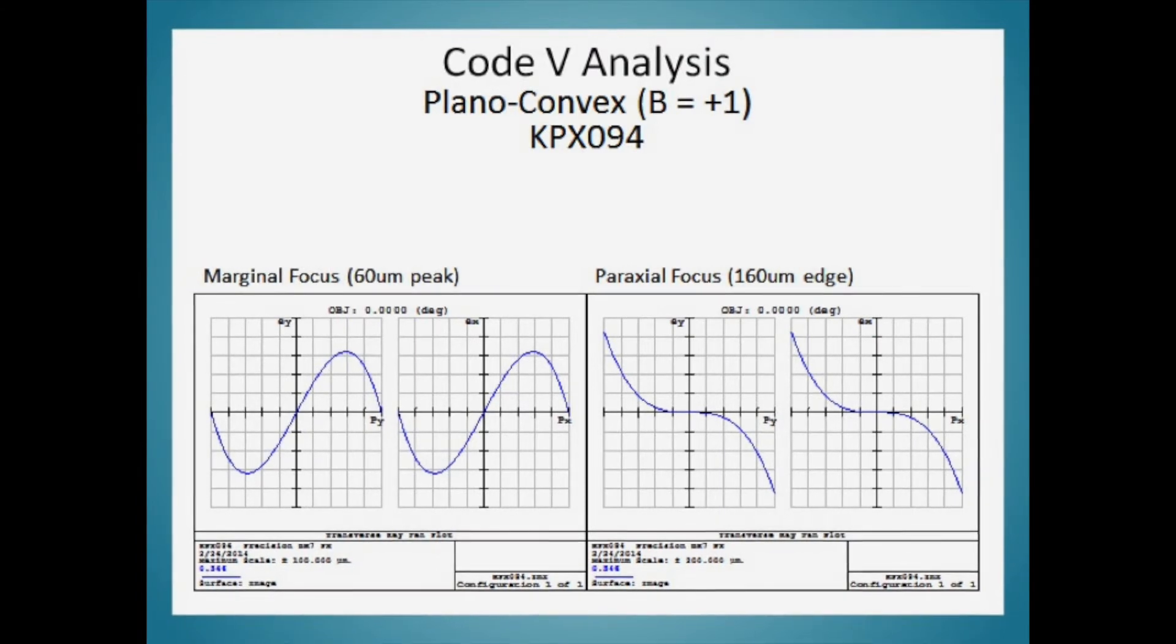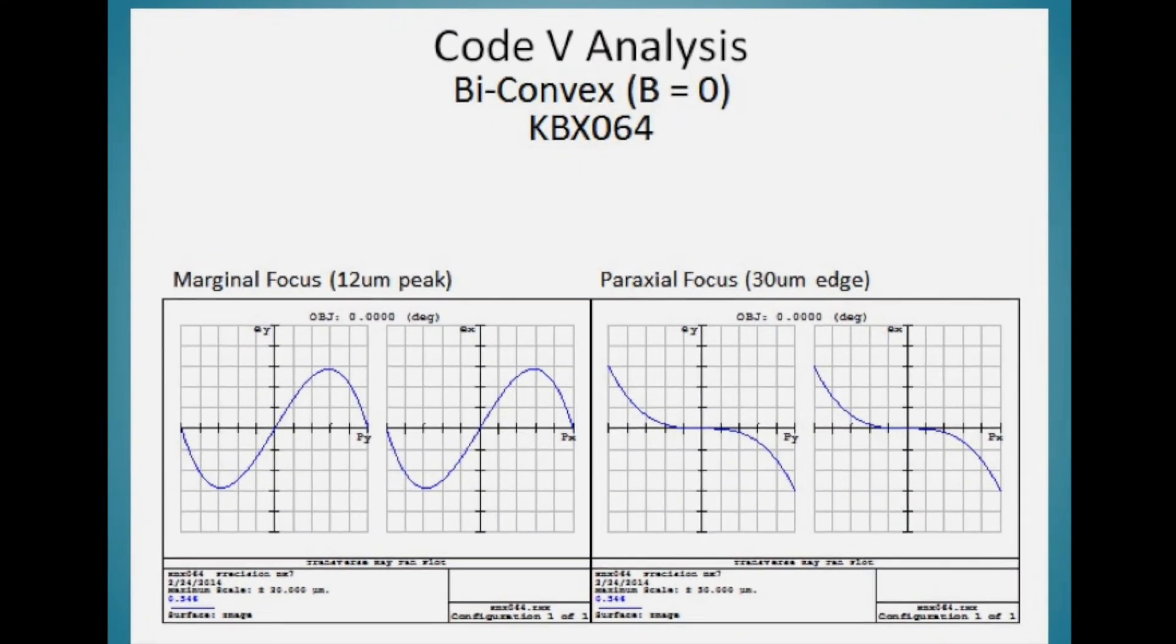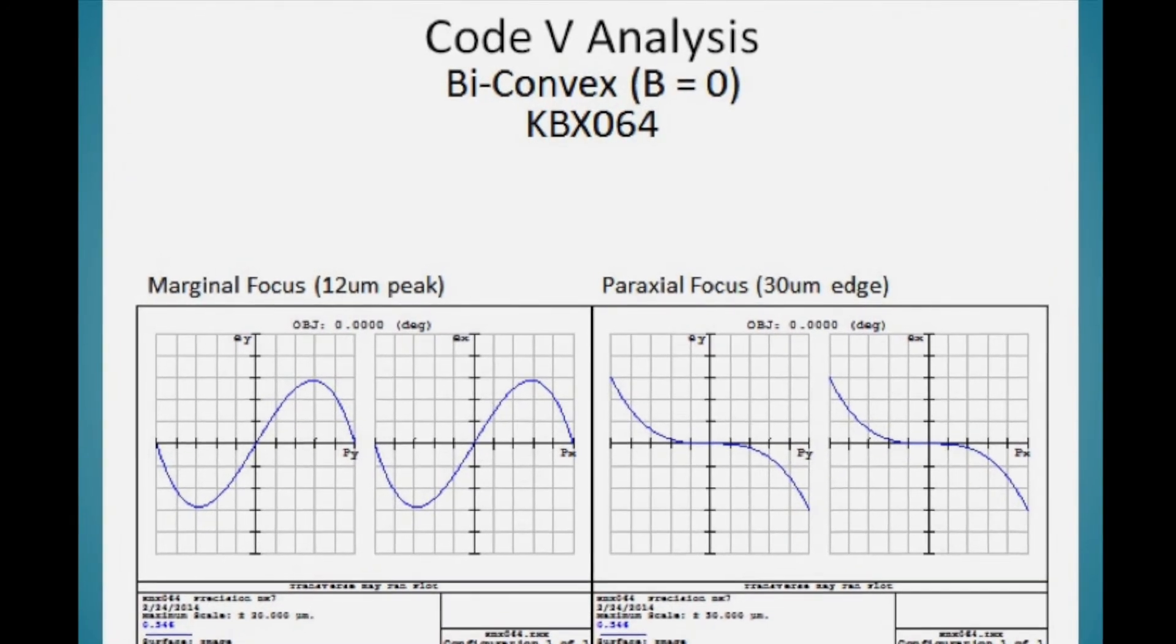For a conjugate factor of c equals minus one, our theory states that the shape factor of b equals one should be ideal, but Zemax shows that a shape factor of b equals zero is ideal.